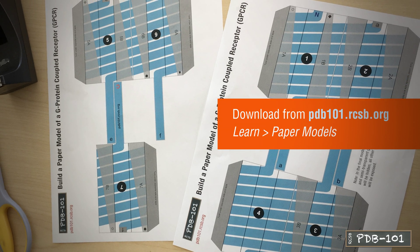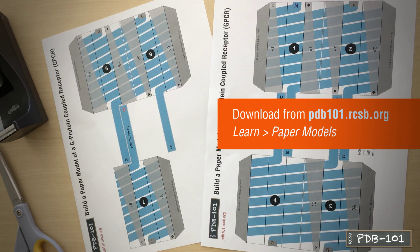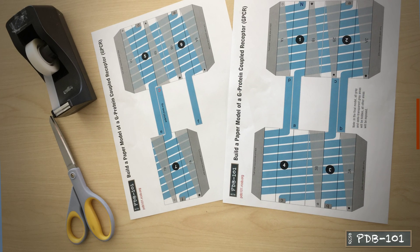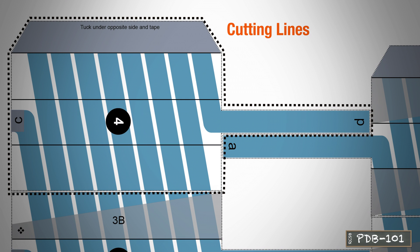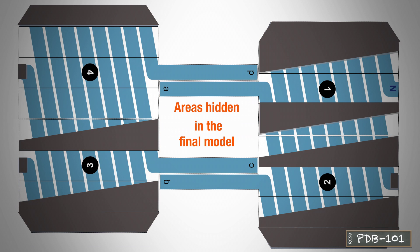To create this model, you will need to download and print the template from PDB-101. You will also need scissors and tape. In this model, the dotted lines are for cutting, and the solid black lines are for folding. The dark gray and semi-transparent gray areas will be hidden in the final model.